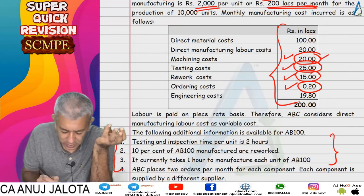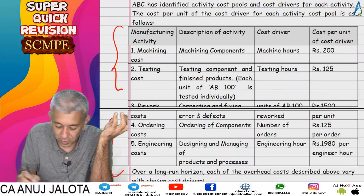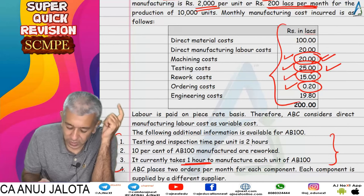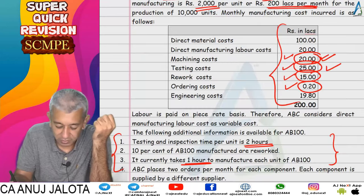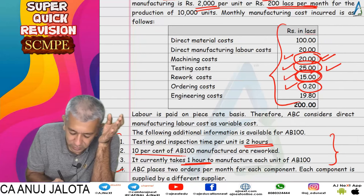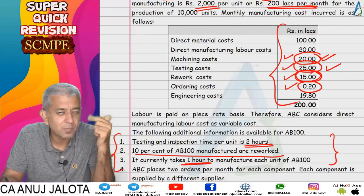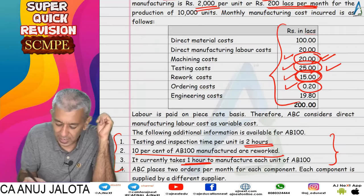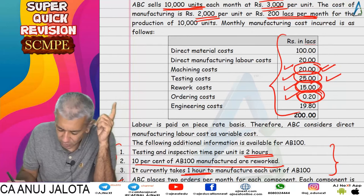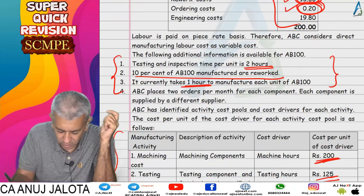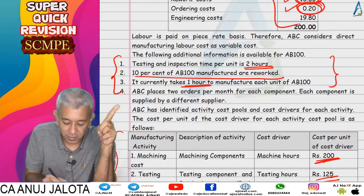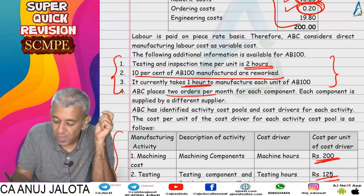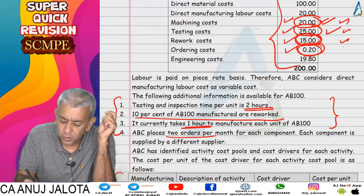Machining cost verification: 10,000 units × 1 hour per unit × Rs. 200 per machine hour = 20 lakhs. Testing cost: 10,000 units × 2 hours per unit × 125 = testing cost figure. Rework cost: 10% of AB100 requires rework, so 1,000 units × 1,500 = rework cost. Ordering cost: 80 components in the product, orders placed twice a month, so 80 × 2 = number of orders × ordering cost of 125. These four costs were verified.